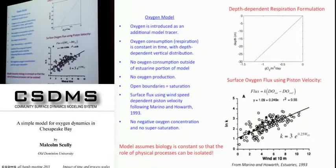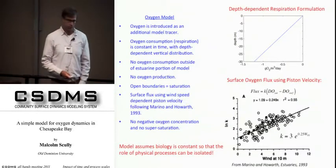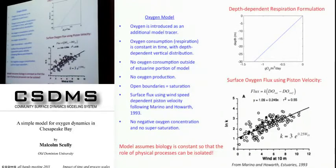I'm basically drawing oxygen out of the water column. The only way oxygen gets back in is through a surface flux — a wind-speed-dependent piston velocity based on the formulation by Merino and Howarth. That takes the surface oxygen concentration, and the difference between that and its saturated value multiplied by K — the piston velocity — gives a surface flux. The key assumption is that biology is constant. This is a very gross simplification, but I want to isolate the role of physical processes and understand the dominant physical processes that modulate oxygen.